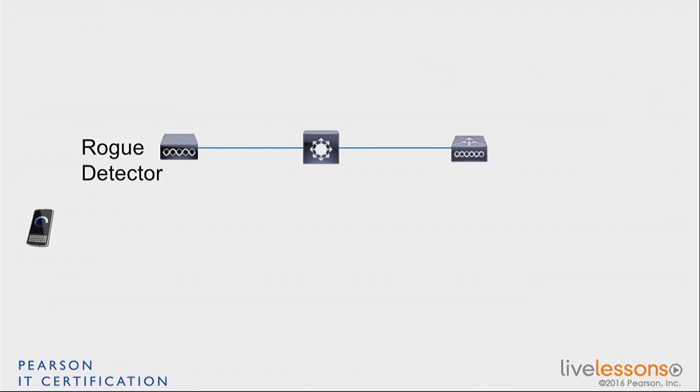When you set an access point in rogue detector mode, it is not servicing any clients. By the way, it is not servicing anything on the wireless side because its radios are down. That sounds surprising. You say, how do you detect rogues if you don't have any radios?